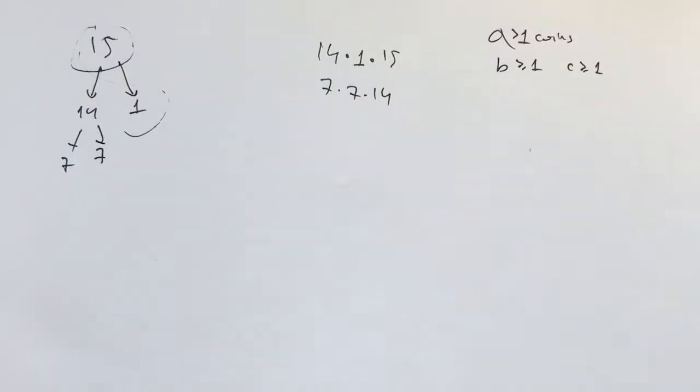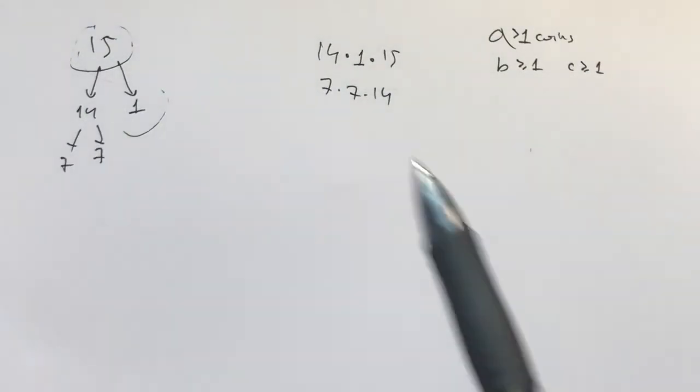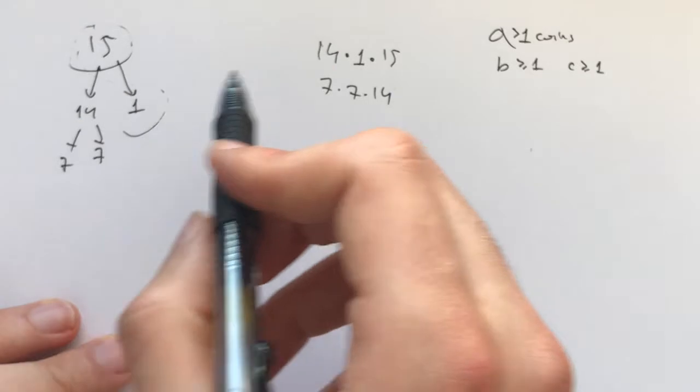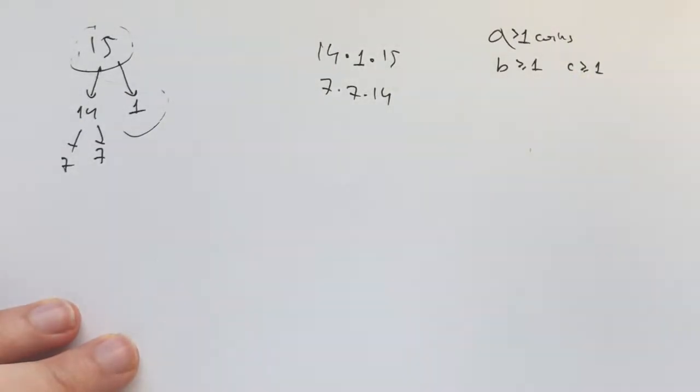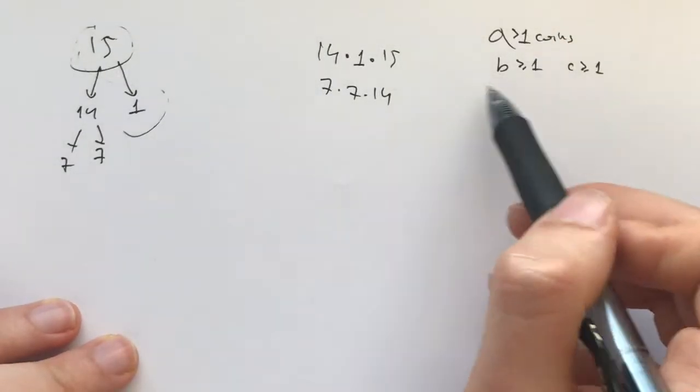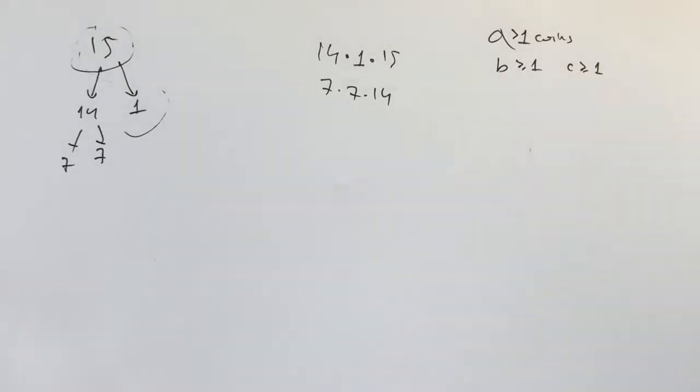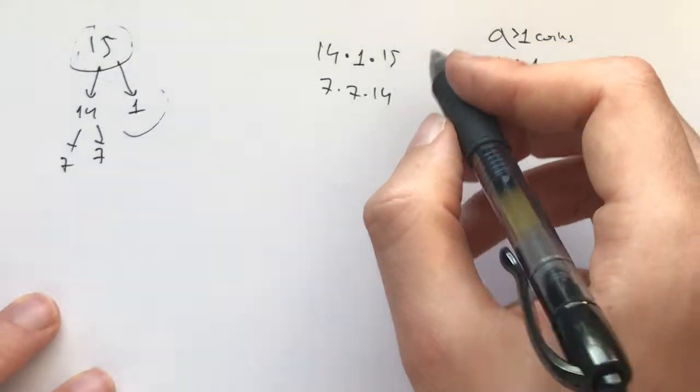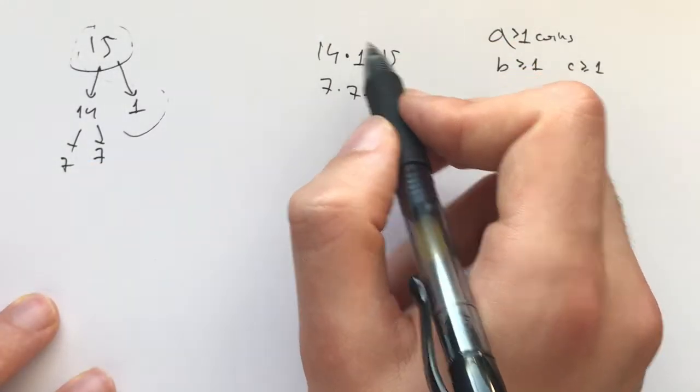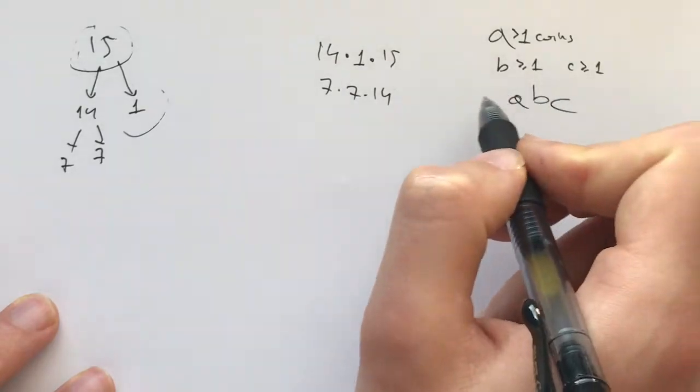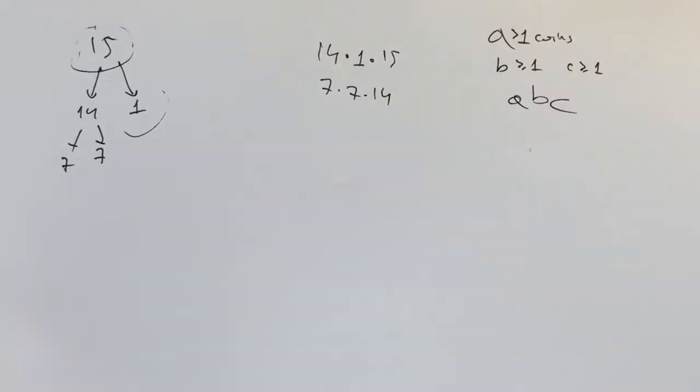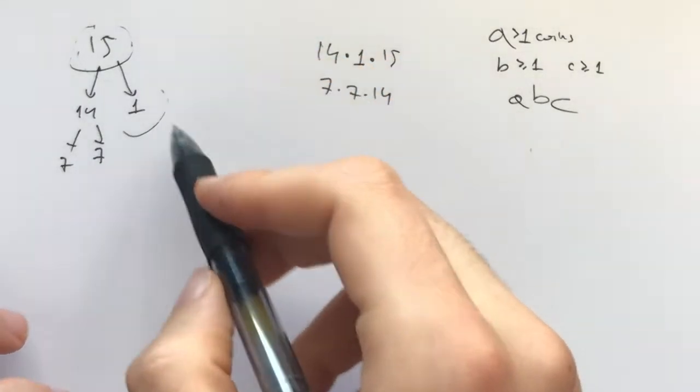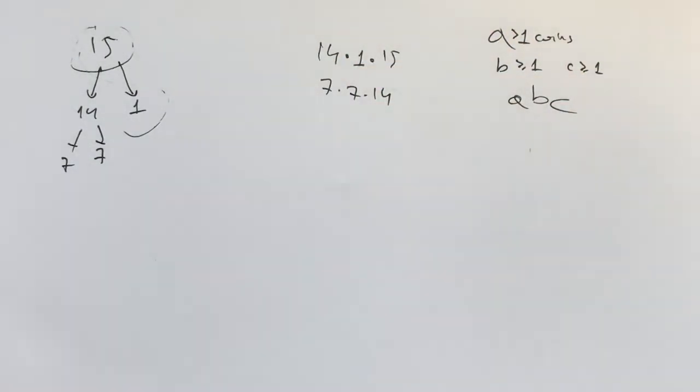So what this problem is, is we have a couple of piles of coins. At the beginning only one big pile of 15 coins, and at every step we choose a pile which has more than one coin, and we break them up into two piles of B and C coins respectively. B plus C is equal to A, and we write down on the board A times B times C. And we do that until we have no more moves left. And the question is, what is the value of all the possible sums of these numbers that are written on the board at the end of the game?